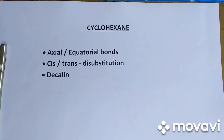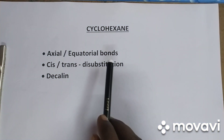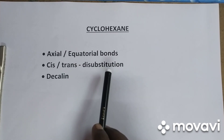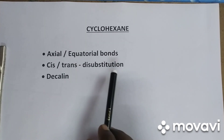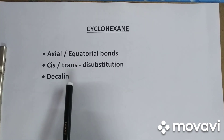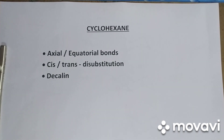In this video we are going to study about cyclohexane axial and equatorial bonds, cis and trans di-substitution in cyclohexane, and decalins — particularly cis and trans decalins. These are the topics we are going to discuss in this video.